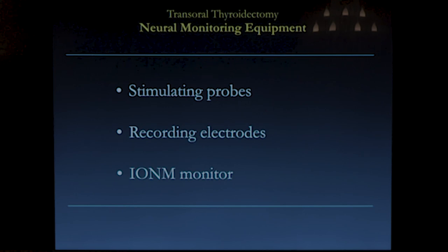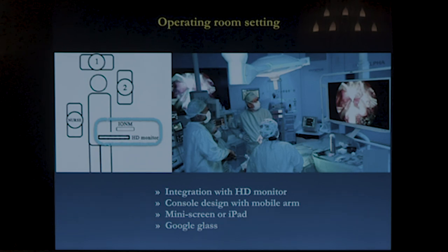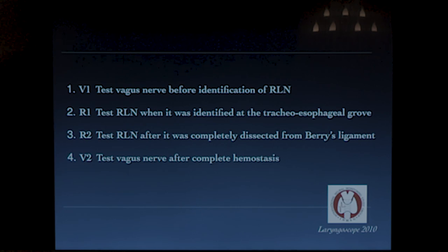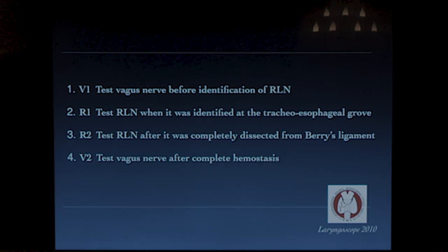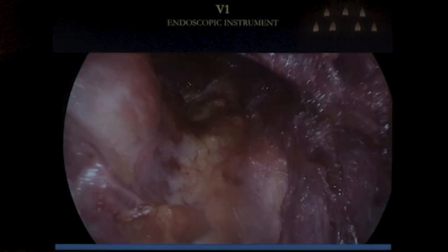The monitoring system is usually fixed close to the HD video monitor, standing at the foot of the patient. For the procedure, it's important to use all the standardized steps commonly used in open procedure and also in the transoral approach: D1, R1, R2, and V2. The approach to the vagal nerve is medial to the strap muscle, not intermediate or lateral.